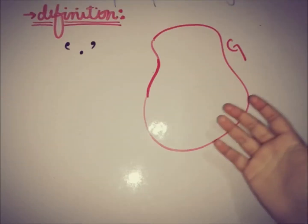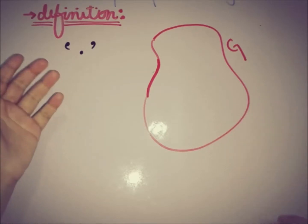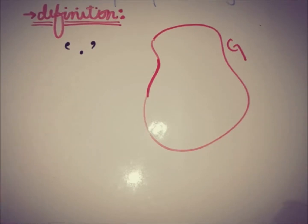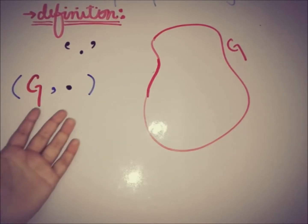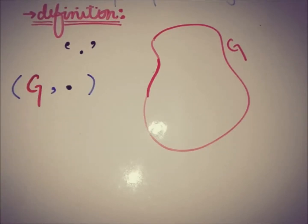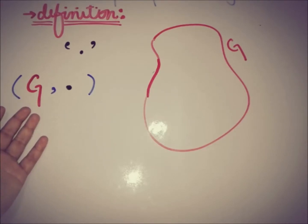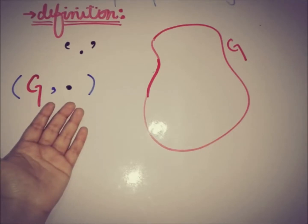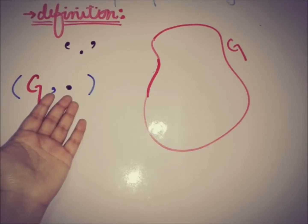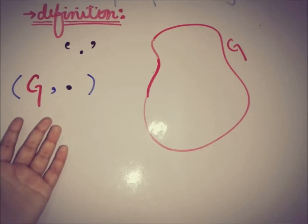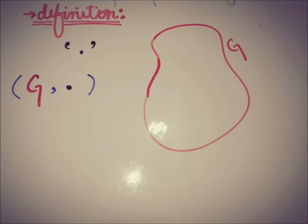Now we have a non-empty set G and an algebraic operation of multiplication, so we can write it in an ordered form. When writing it in ordered form, the set under consideration is written first and the operation is written in the second place. This is said to be a group if and only if it satisfies three axioms.